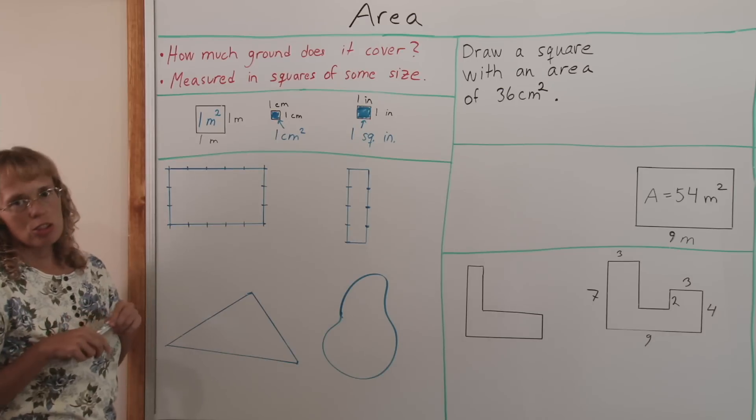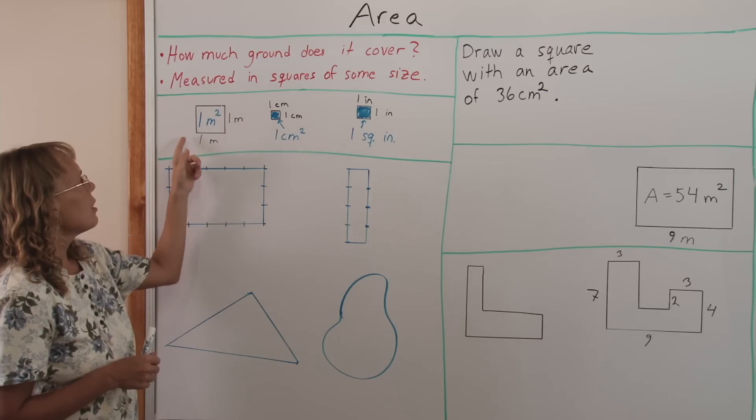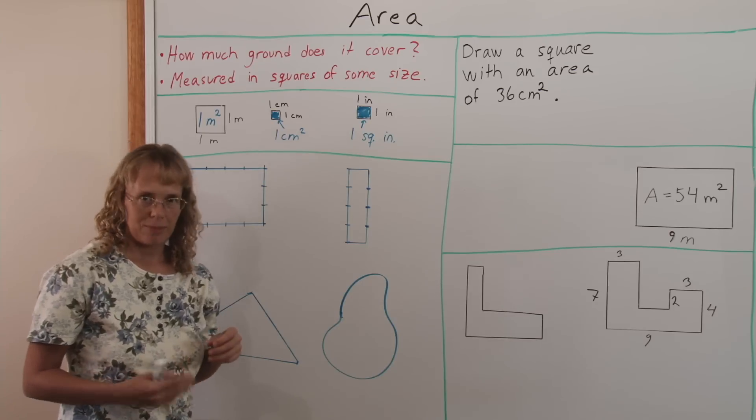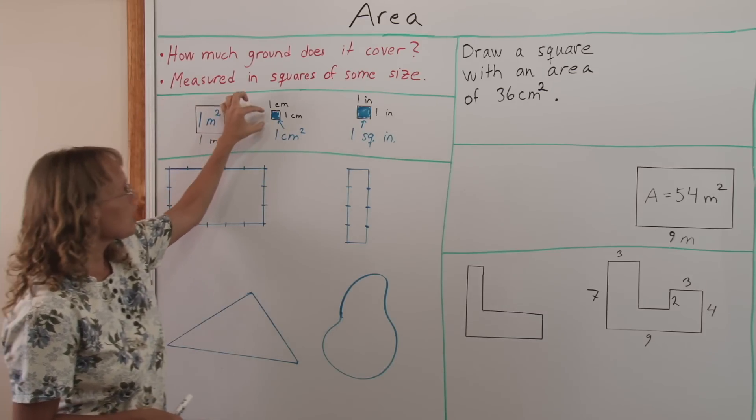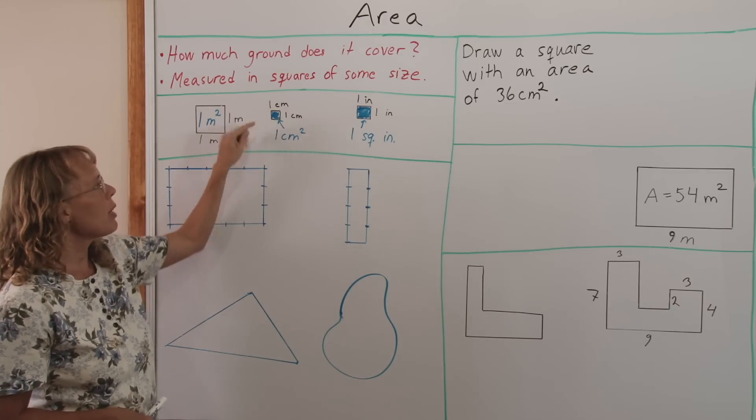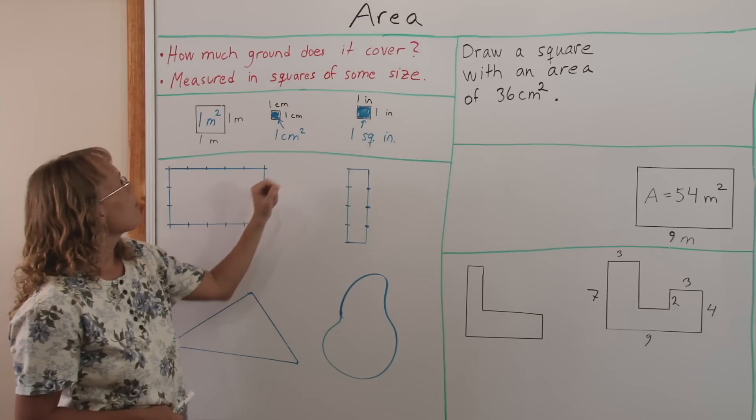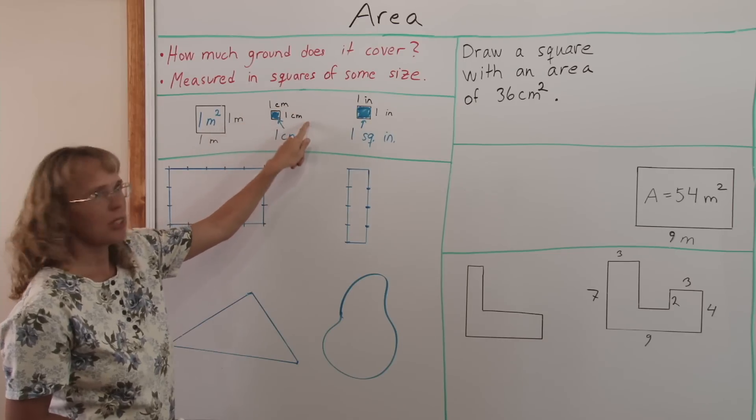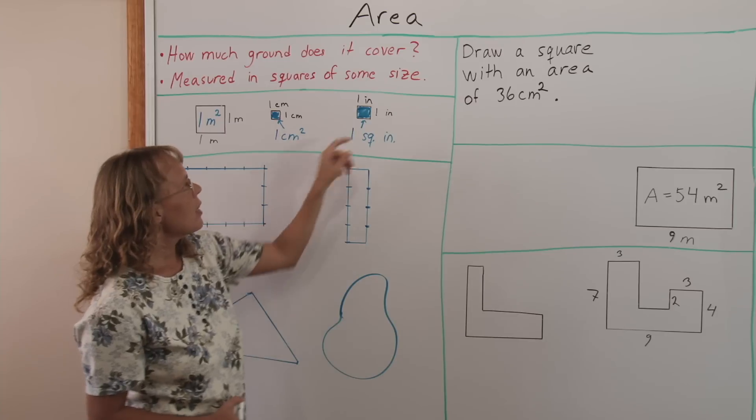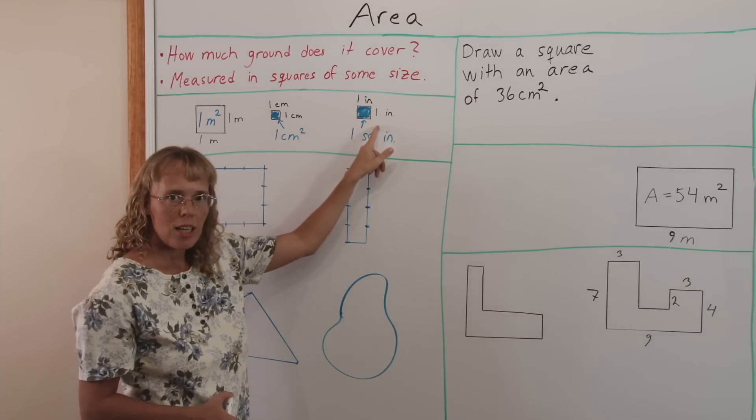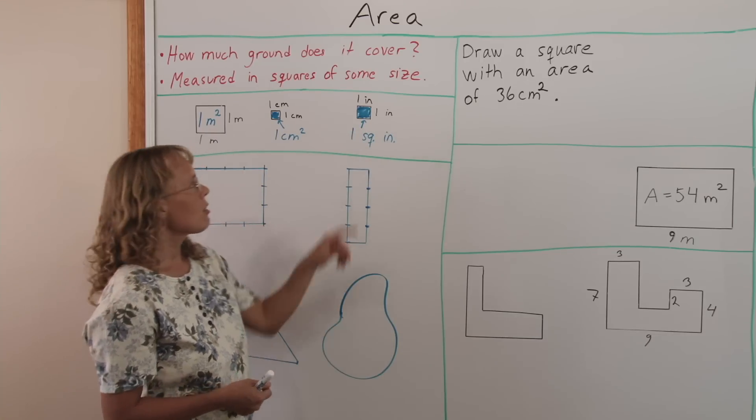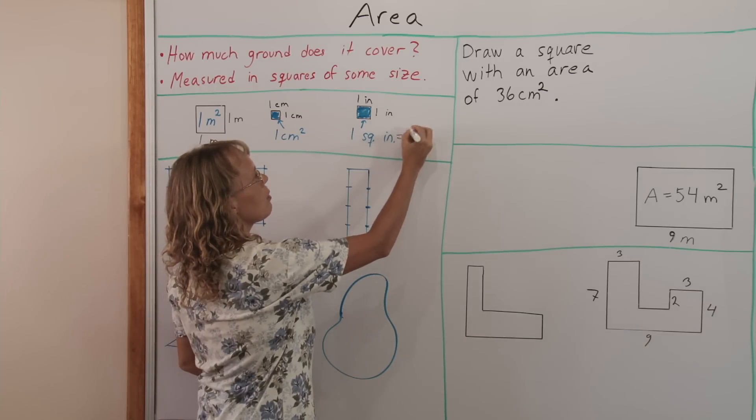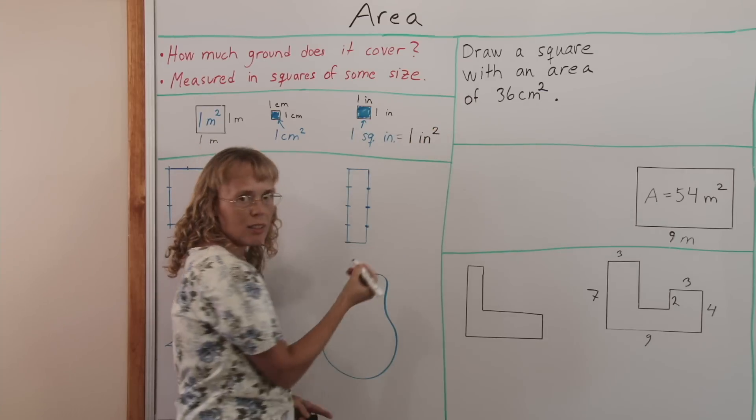Here are some examples of squares, they are not drawn to scale. But if I had a square where the size was one meter by one meter, then we call it a one square meter. This square, if its sides are one centimeter, then it is called one square centimeter. And this little 2 here indicates the squaring, indicates that we have gone like centimeter times centimeter, centimeter squared, so to speak. Here if we have a one inch and one inch sides, then the square has the area of one square inch. You can write it as 1 sq in, or you could also write it one inch squared or square inch.